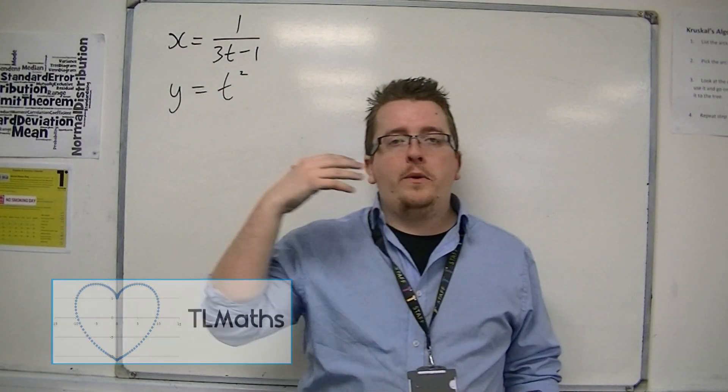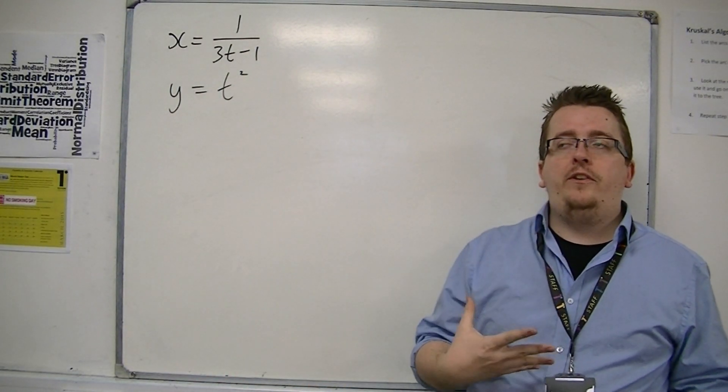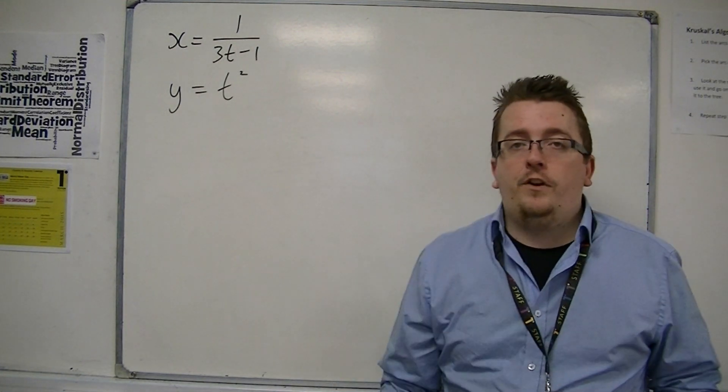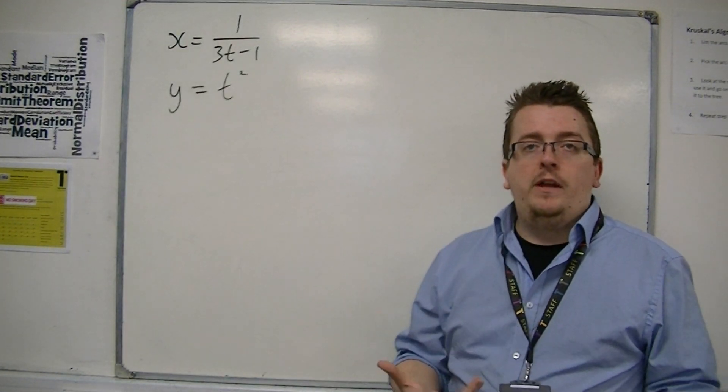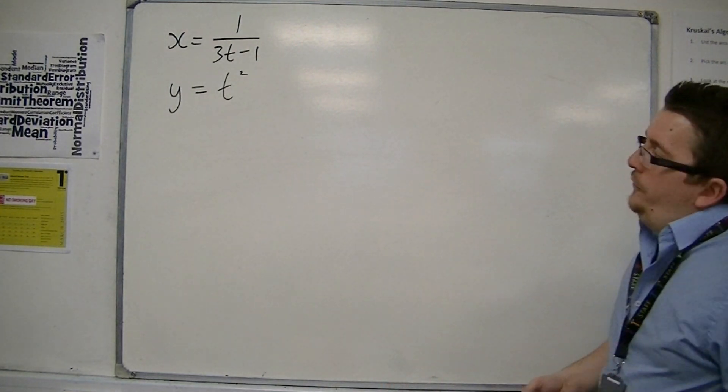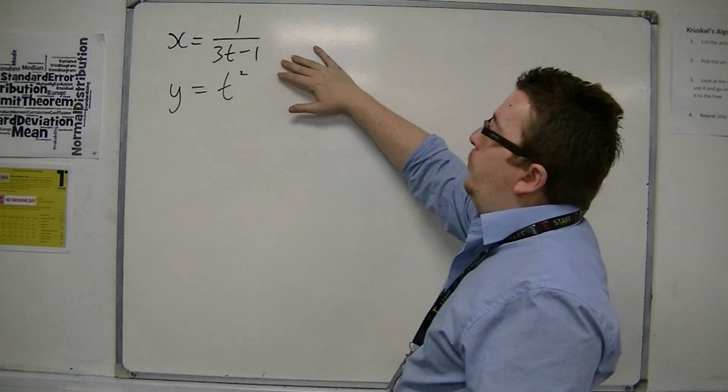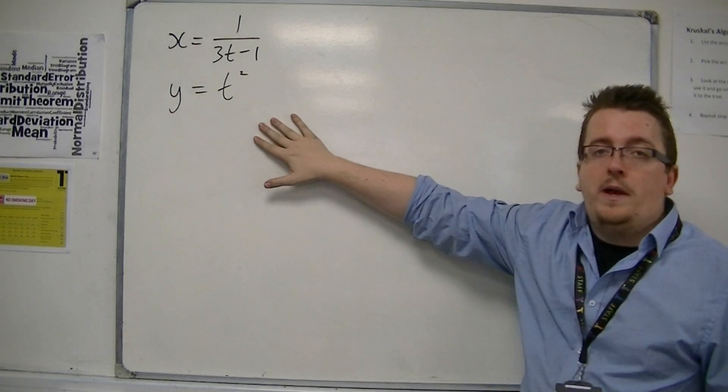In this third example of going from parametric equations to Cartesian equation, I really want to identify some of the problems that can be found. Here is an example where I've got x equals 1 over 3t minus 1, and y equals t squared.